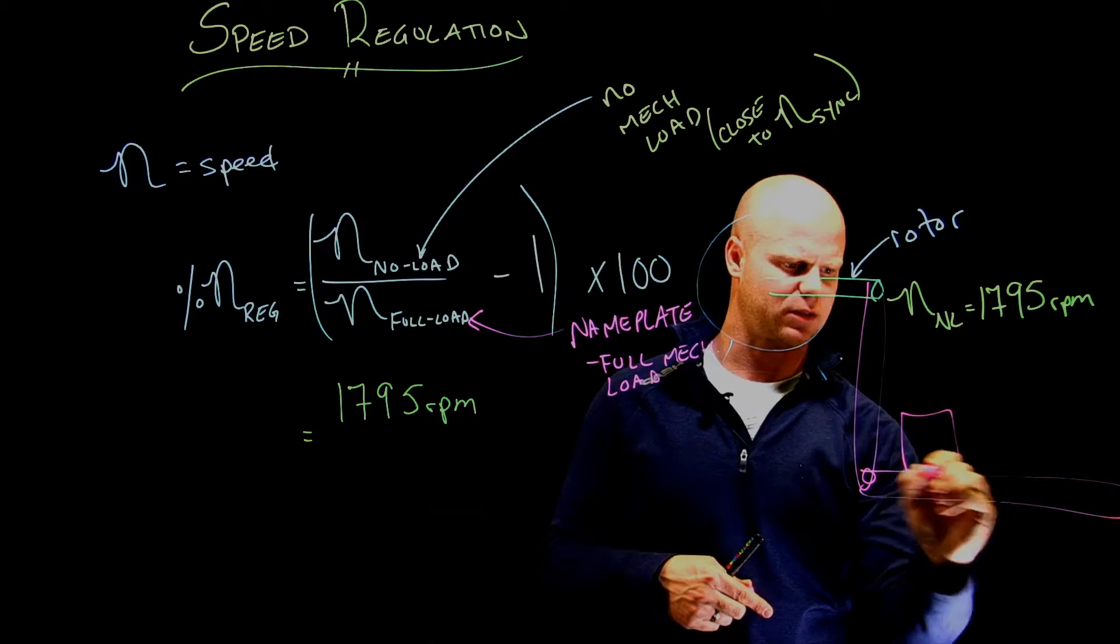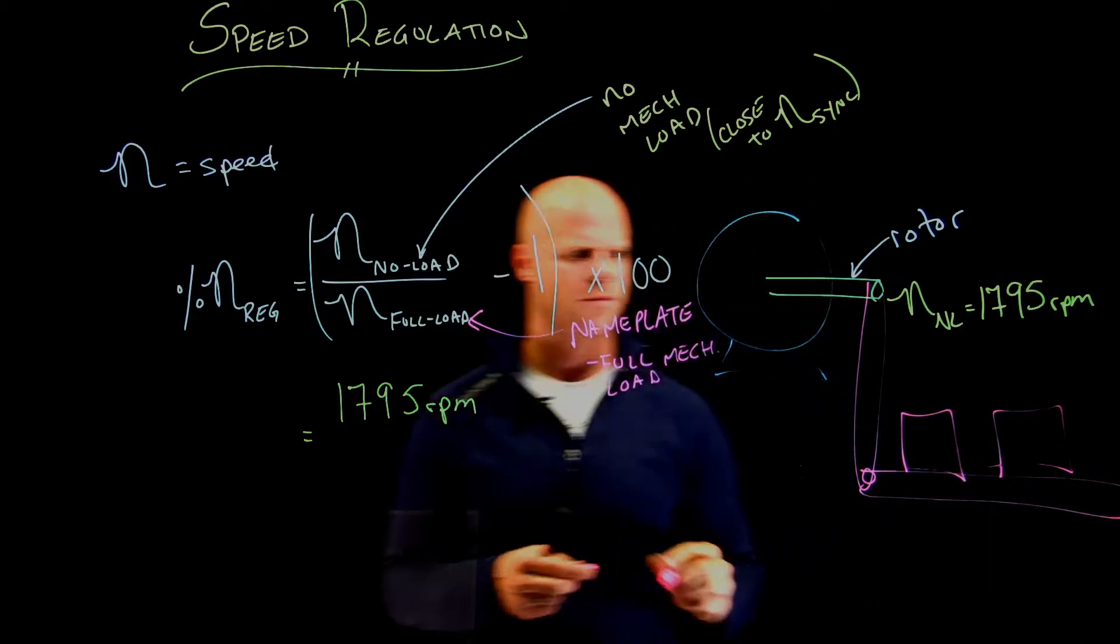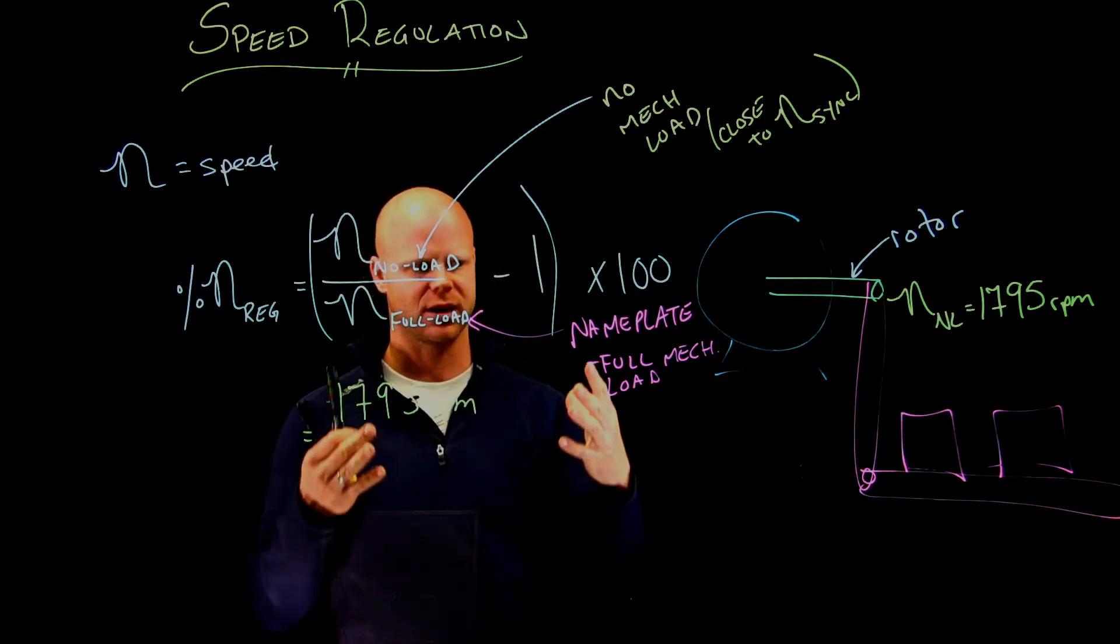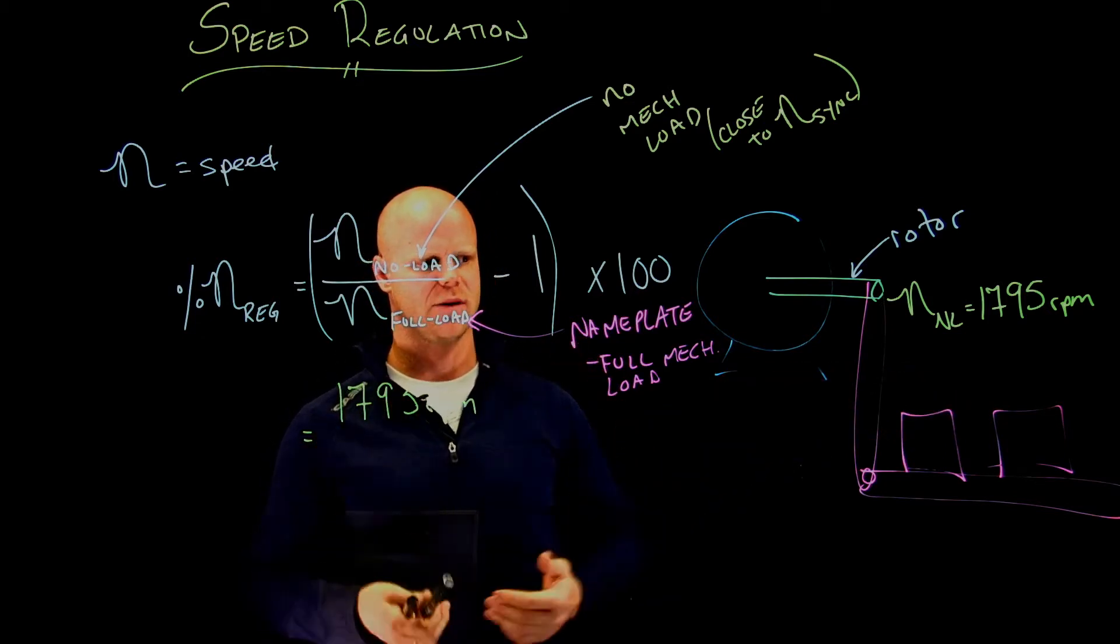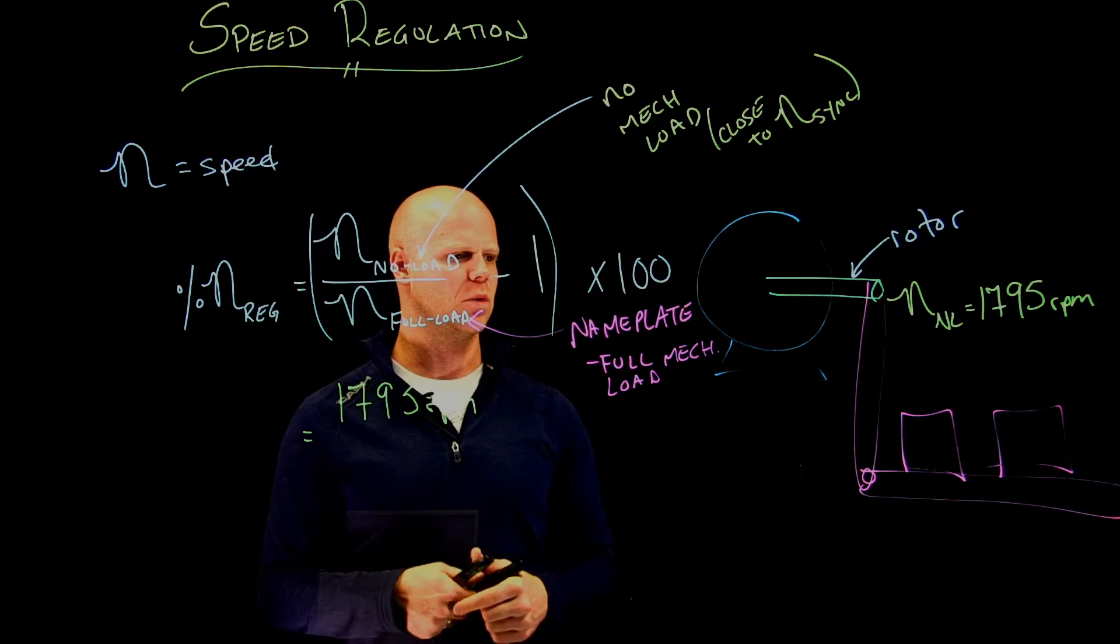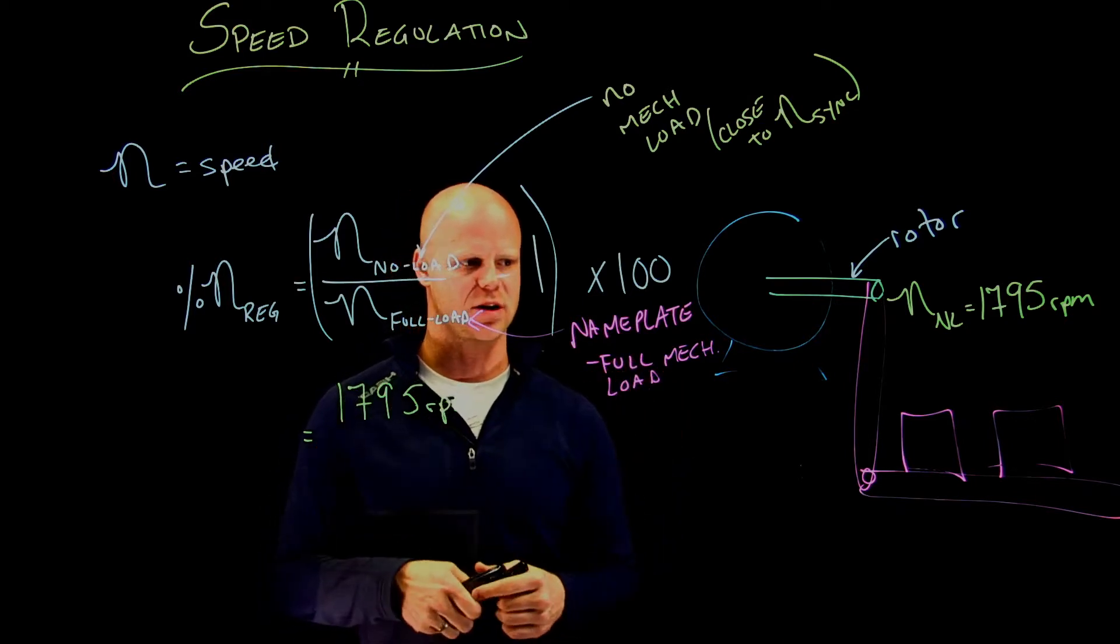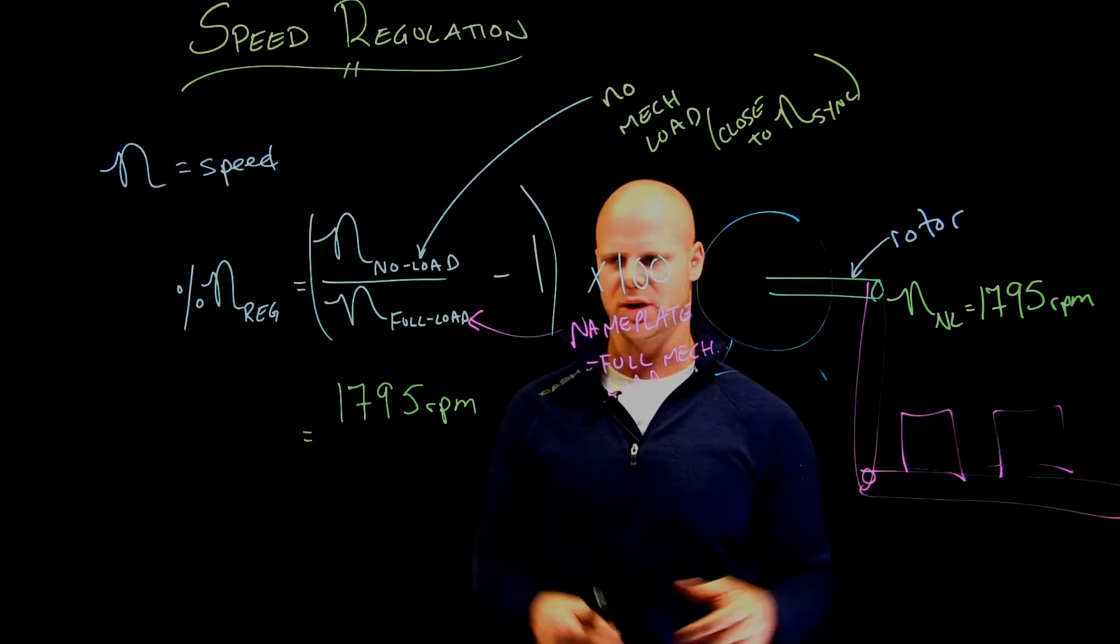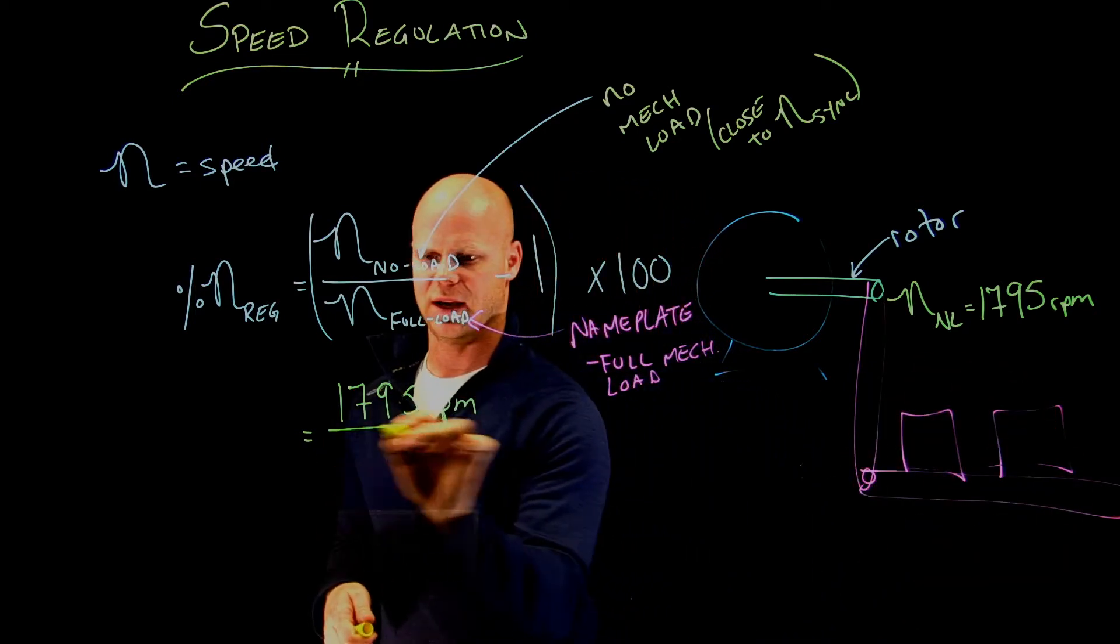On my conveyor belt, I'm going to be moving some boxes. What's going to happen? You added mechanical load. The motor is going to slow down because it's now performing work, and that's going to cause a decrease in speed. We did our calculations—we're going to move this to full mechanical load and it operates at 1740.